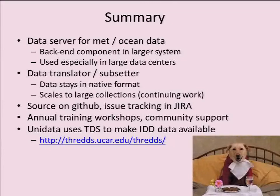In summary, we have a data server for meteorological and ocean data. It's really a back-end component for a larger system — not a polished data portal. It's used a lot in large data centers in the U.S. and around Europe. It's essentially a data translator and subsetter; the data stays in the native format and we're not copying it into a database. We're working on scaling to large collections. The source is in GitHub, we have issue tracking in JIRA, we do annual training workshops, and we use it ourselves to serve the IDD data stream.